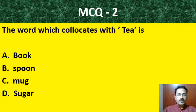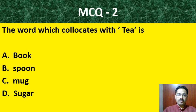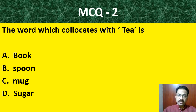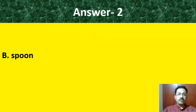Question number 2: The word which collocates with 'tea' is — book, spoon, mug, or sugar. The correct option here is spoon — teaspoon.